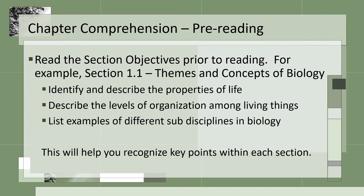A strong suggestion for your success in this course, as mentioned in the welcome video, is to look at the section objectives before you read the chapter. These will help you recognize key ideas and make them pop as you read. For example, by the end of chapter 1, section 1, you should be able to identify and describe the properties of life, describe the levels of organization among living things, and list examples of different sub-disciplines in biology. Knowing these points before you read will help you pull out the key ideas in each section.